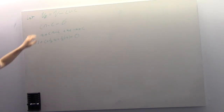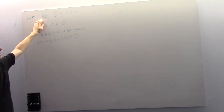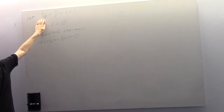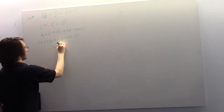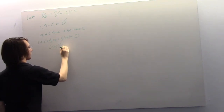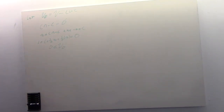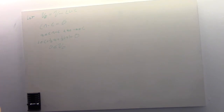For V-naught to be the null space of a linear functional, it must contain zero, which it does.